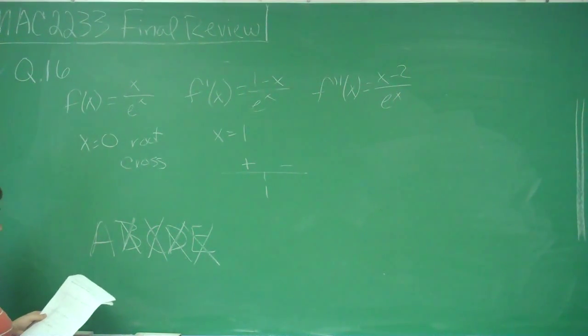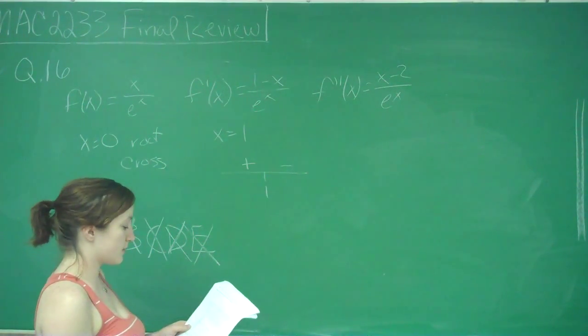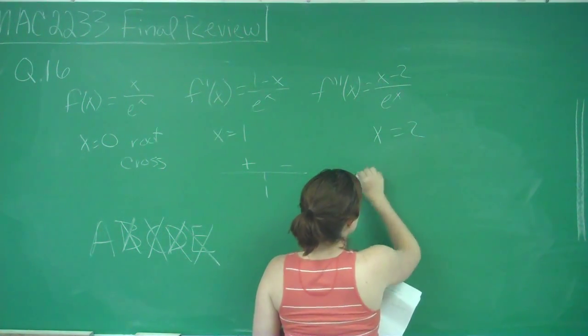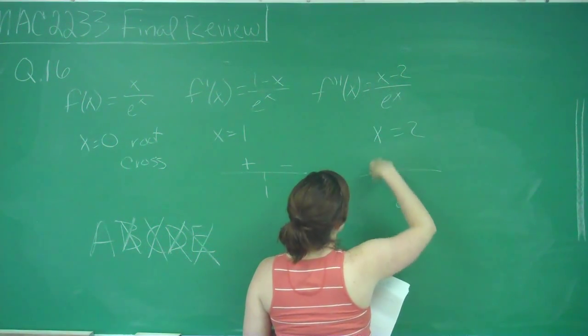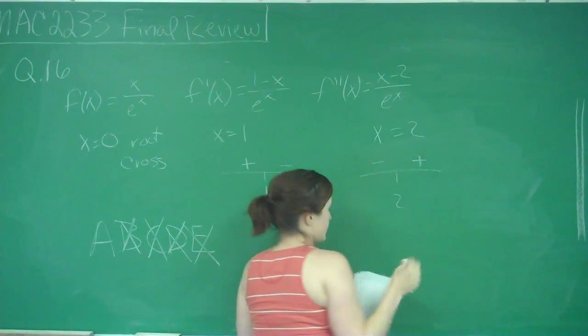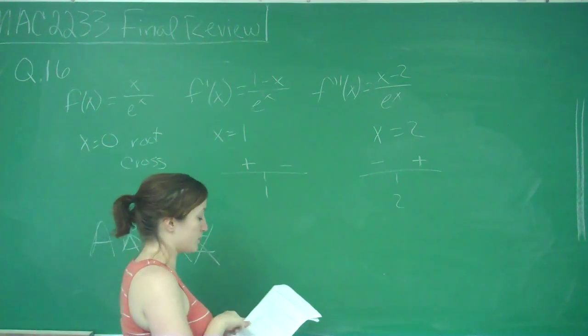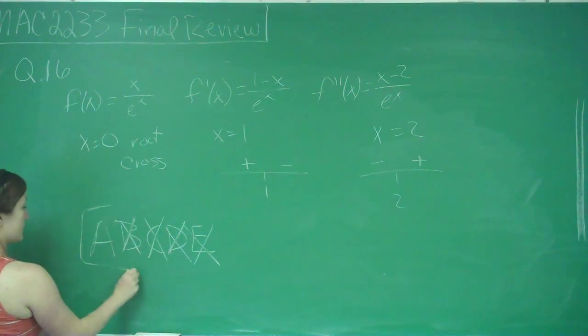Just to make sure that graph A is our best choice, we can see that it's increasing up to 1, decreasing after 1. We can also test the concavity. Our concavity should change at x = 2. If we plug in 1, (1-2)/e gives negative over positive. As you can see, on graph A, the concavity switches from concave down to concave up at 2. So your best choice is graph A.